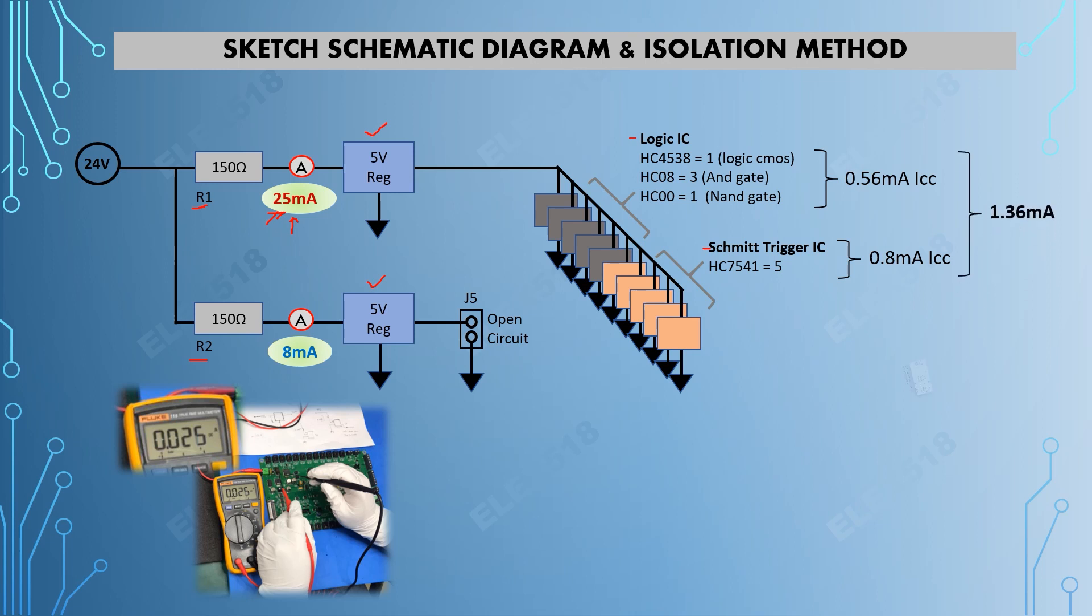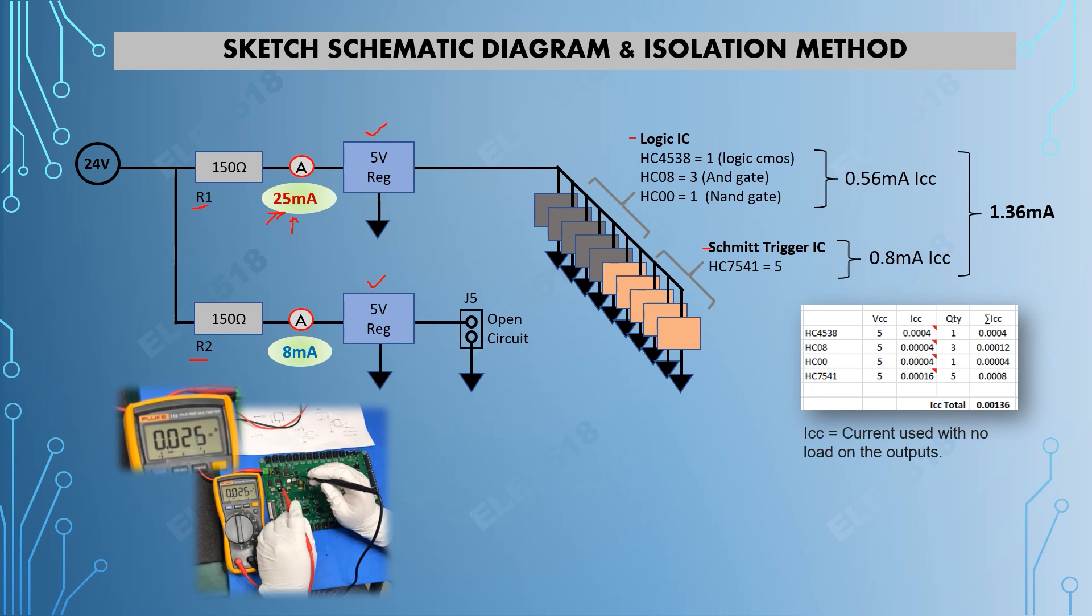So the total consumption of these ICs is 1.36 milliamps. Based on the ideal calculation, the reading here must be 9.36 milliamp only.